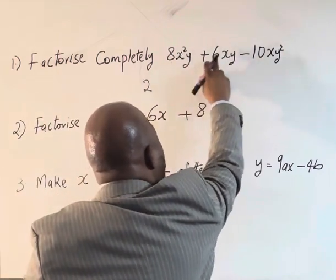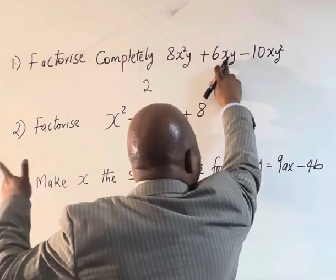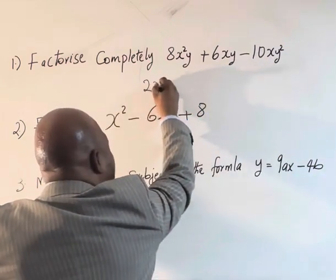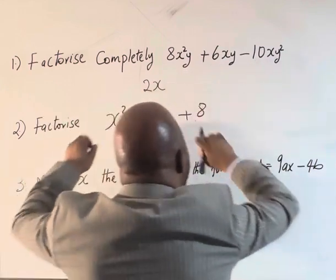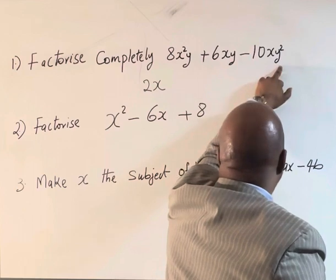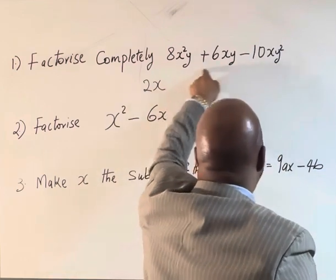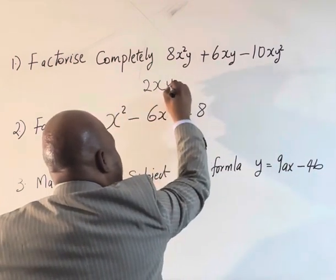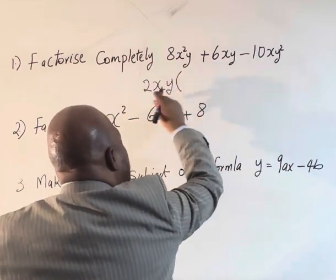Here we have x raised to power two, here we have one x, so that means one x we can take, and here we also have one x. And again, you look at here we have one y, one y, y squared, so we have one y in common. We take y in brackets.